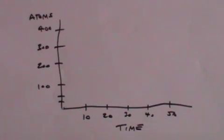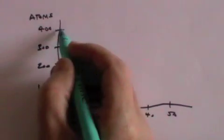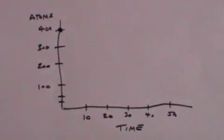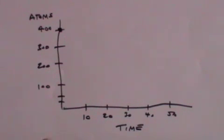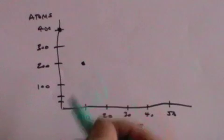Let's suppose that at the start of the process, when t equals 0, there are 400 atoms. And let's suppose the half-life is 10 seconds. What that means is that after 10 seconds, there will be half as many as there were before. There were 400. Now there are 200.